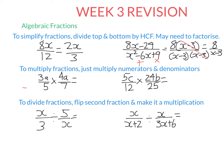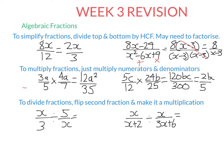Now let's look at multiplying fractions. You just multiply the numerators and multiply the denominators. So 3a times 4a is 12a squared — 3 times 4 is 12, and a times a is a squared — and 5 times 7 is 35. For the next example, multiply the tops: 5 times 24 is 120, giving 120bc on top, and 12 times 25 is 300 on the bottom. This simplifies — 120 over 300 is 2 over 5 — so the answer is 2bc over 5.